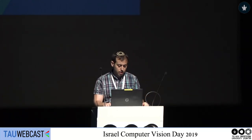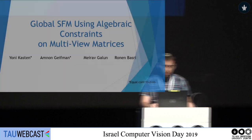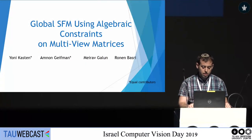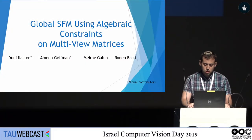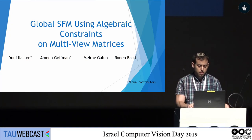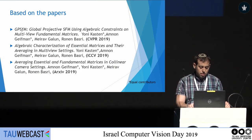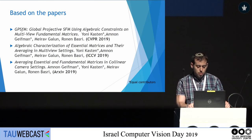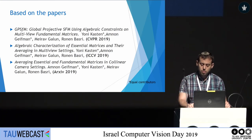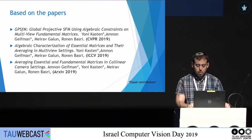Thank you for the introduction. My name is Ioni and this is a joint work with Amnon Geifman, Merav-Galoum and Ronen Batzri from Weizmann Institute of Science. The topic is global SfM using algebraic constraints on multi-view matrices. This talk is based on three papers: one from the last CVPR, the second from the last ICCV, and another submitted to arXiv.